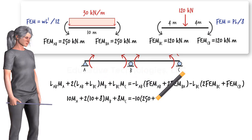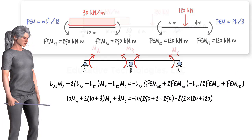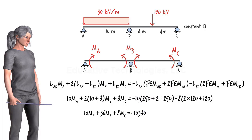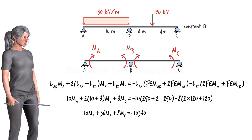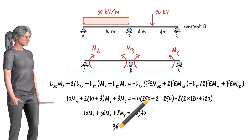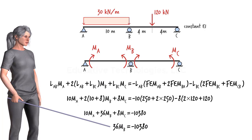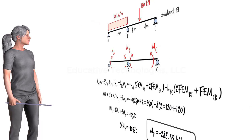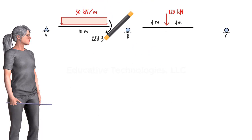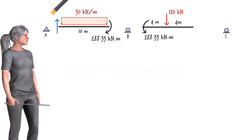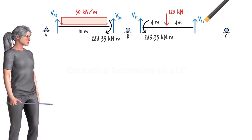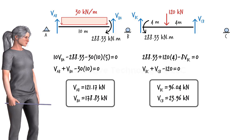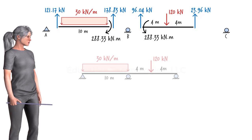Simplifying further, and since the beam rests on a pin at A and a roller at C, MA and MC equal zero. Solving this equation for MB, we get the result. Knowing MB, we are now in a position to calculate the member-end shear forces using the static equilibrium equations. Solving these four equations for the four unknowns, we get the shear forces, and therefore the beam support reactions.